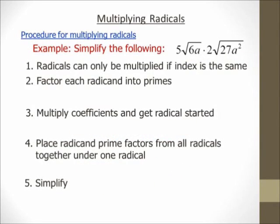Hi there, it's me, Mr. B. We're going to multiply radicals. This is very similar to simplifying radicals, except instead of just having one radical, I have two. Alright, so let's go ahead and simplify 5 square root of 6a times 2 square root of 27a squared.